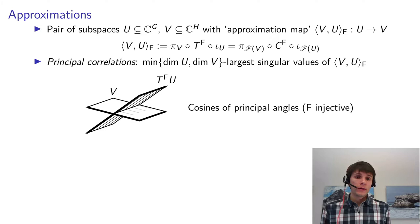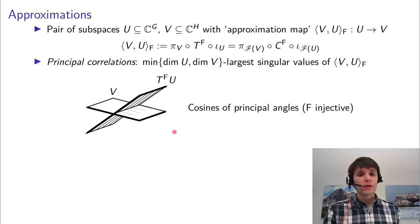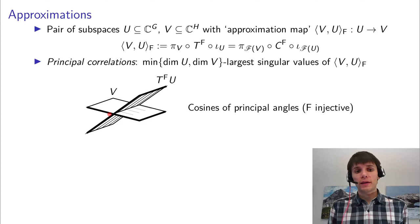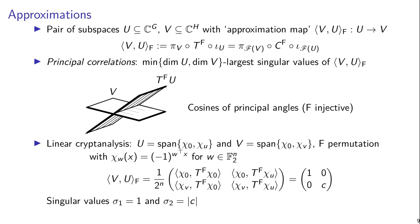What this means geometrically is that we look at, in the case that F is an injection, the principal angles between T_f(U) and V. So in this example there is a common line, so the first principal angle will be zero. That means the cosine of that angle — the first principal correlation — is going to be one. And then there is a second principal angle, which here is something non-zero but positive. So let's take a look at that in the case of linear cryptanalysis.